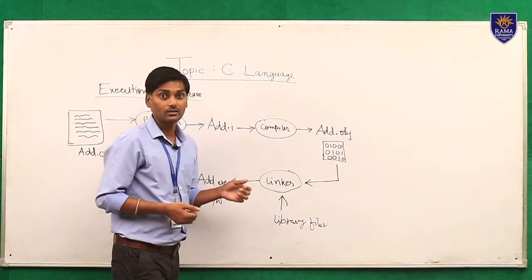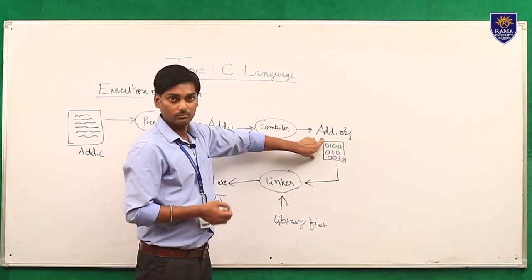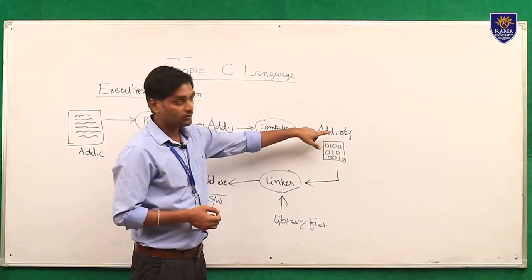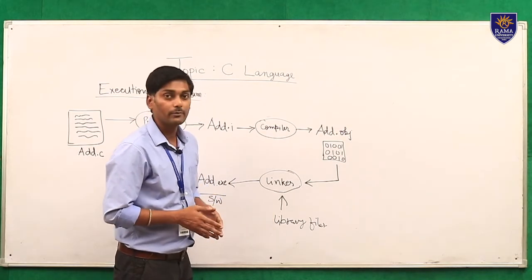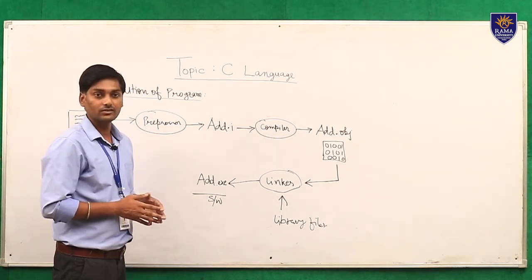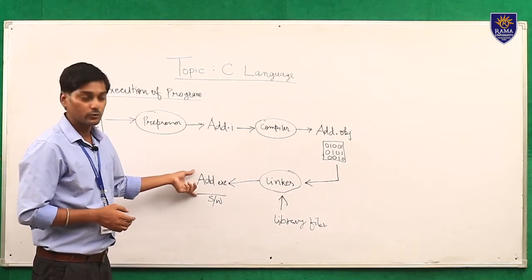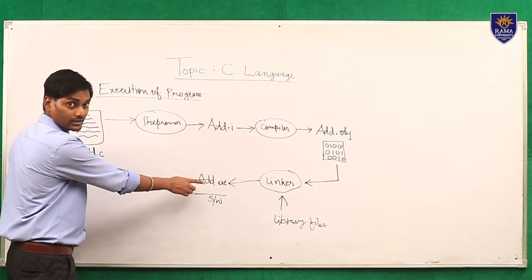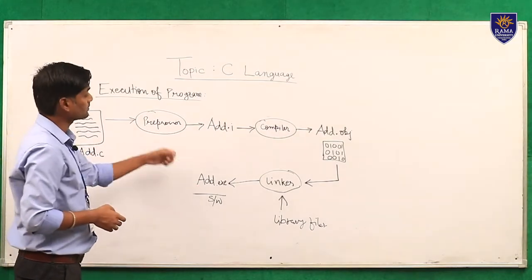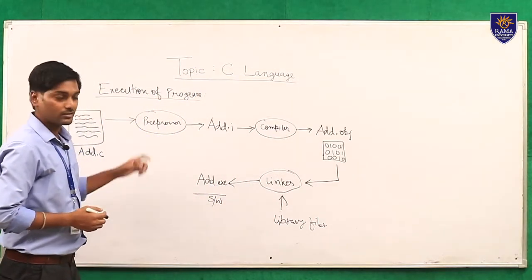The compiler converts the source code into machine language (0s and 1s). Then the linker takes the object file and, with the help of library files, converts the program into an executable file — our final software visible to humans. The source code (.c) and executable files are the two visible states; the intermediate files are hidden states we cannot see.